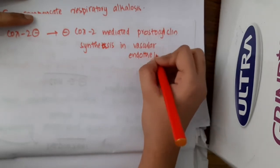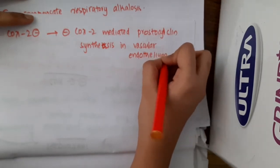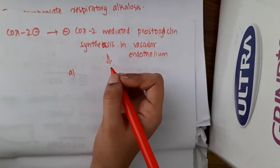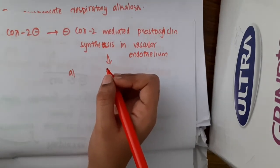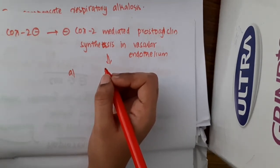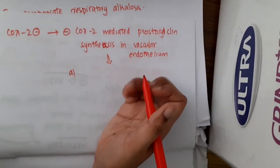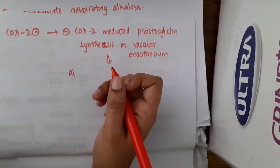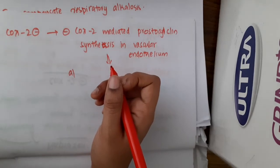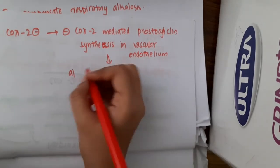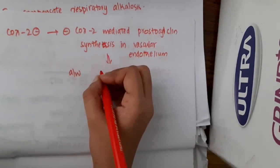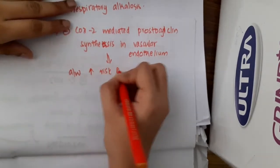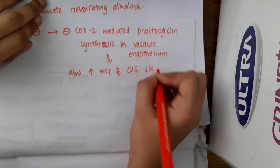Because COX-2 mediated prostacyclin synthesis is inhibited, the anti-aggregatory effect of prostacyclin is lost. As a result, COX-2 inhibitors are associated with an increased risk of cardiovascular side effects.